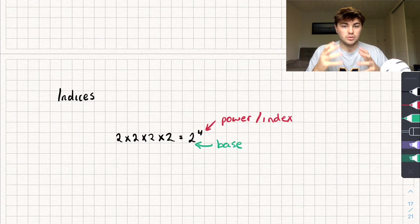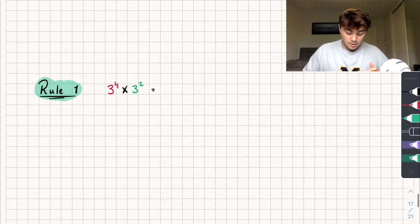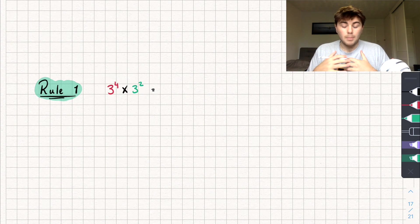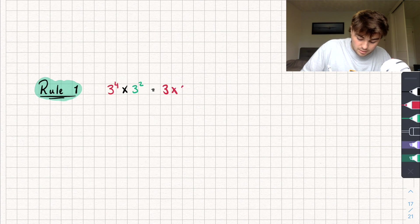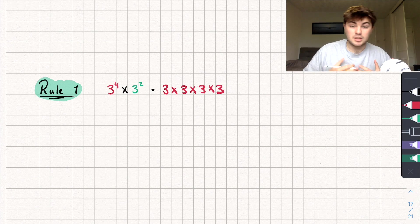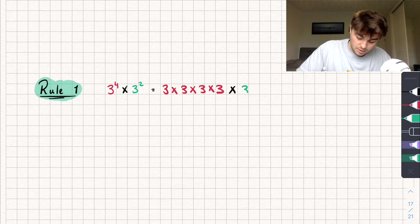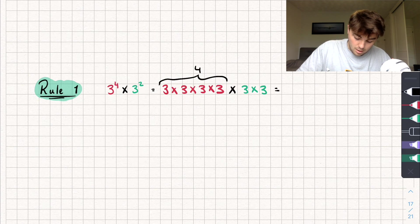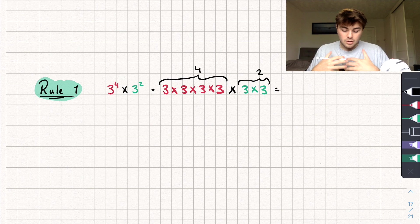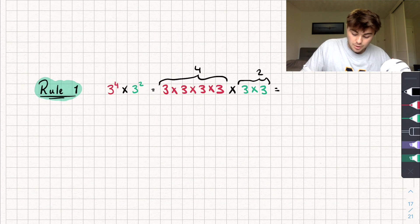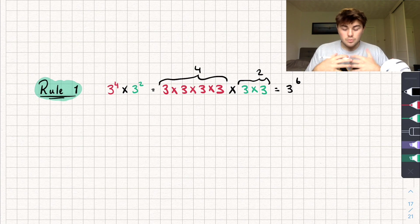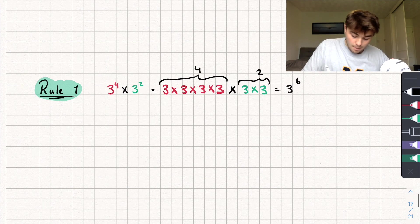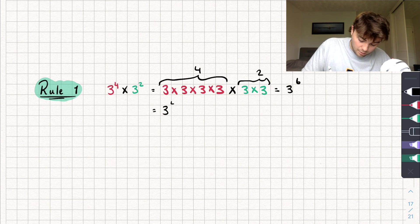Let's look at some rules to do with indices. The first one: say we have 3 to the power of 4 multiplied by 3 squared. We could write that as 3 times 3 times 3 times 3 — that's 3 to the power of 4 — multiplied by 3 squared, which is 3 times 3. We've got 4 threes and 2 threes, so we're multiplying 3 by itself 6 times. We could write that as 3 to the power of 6. So all we're doing is adding the powers together: 3 to the power of 4 plus 2 gives us 3 to the power of 6.